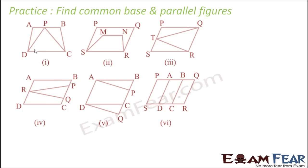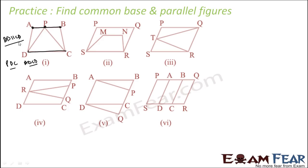Practice problem 1: we have figure TDC and figure ABCD. Both share common base CD. Now checking the second condition — the vertices A, P, B opposite to CD form a line APB. Since ABCD is a parallelogram, AB is parallel to CD, so line AB is parallel to CD. Therefore these figures are on the common base CD and between the same parallels.